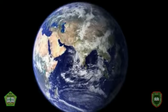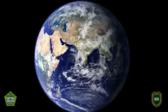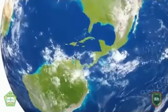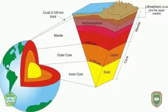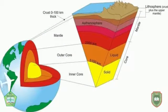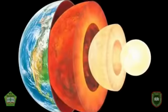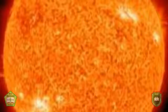Besides having the structure of the Earth's upper layer, which is composed of a set of gas layers, the Earth also has a lower layer from where our feet stand to the core of the Earth. From the outermost layer, the Earth's crust is the outermost layer of the Earth. Together with the Earth's mantle, this layer forms the lithosphere with a thickness of about 80 km.